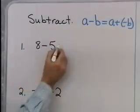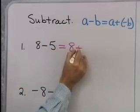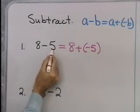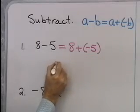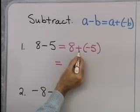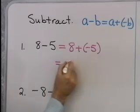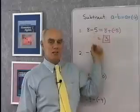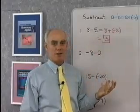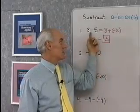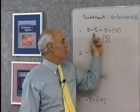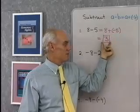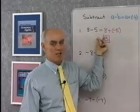8 subtract 5. According to my definition, this is 8 plus negative 5. So instead of subtracting a positive 5, I add its opposite, negative 5. Now I have an addition problem. I know how to add 8 and negative 5 — the answer is simply 3. That's consistent with the answers you used to get in basic math. This new definition gives an answer consistent with what we're used to getting.